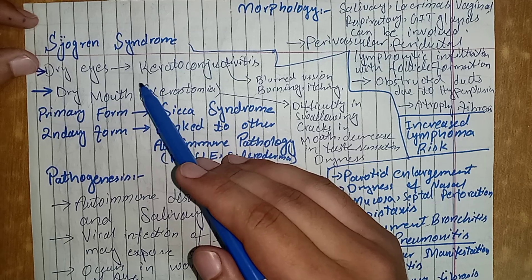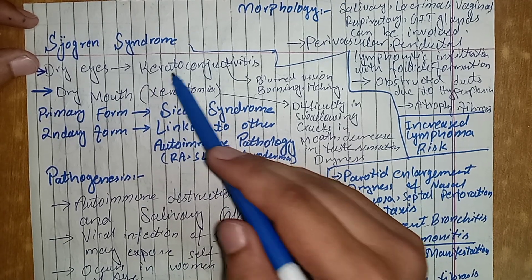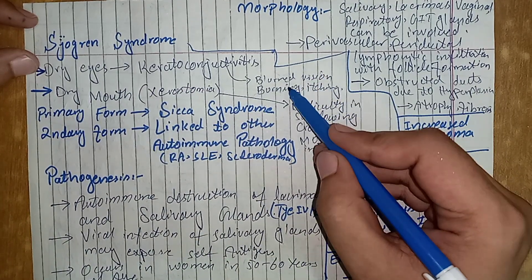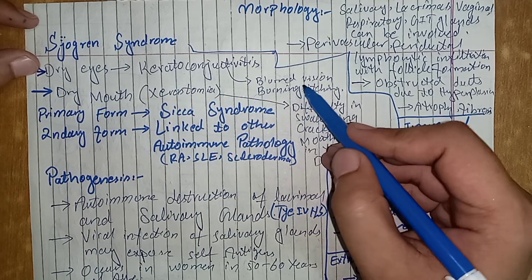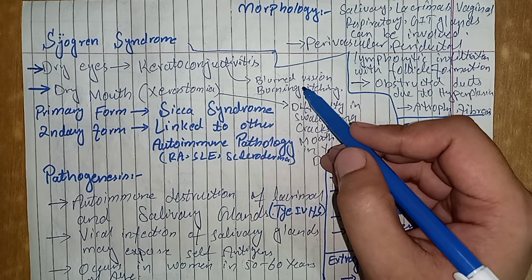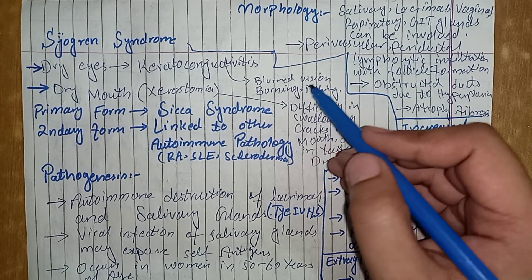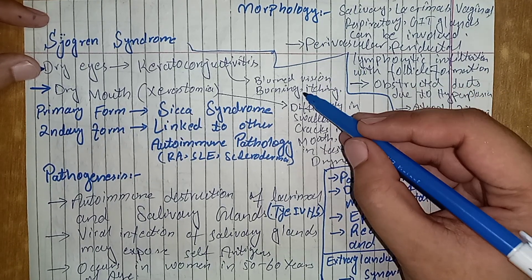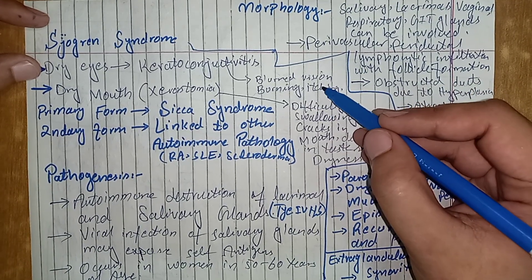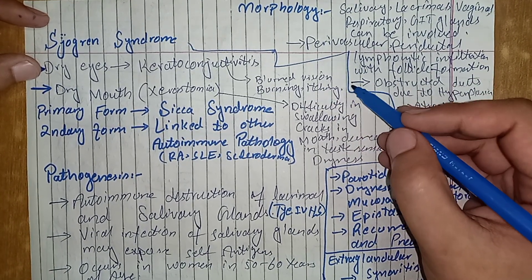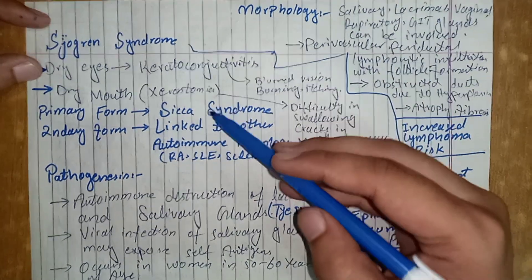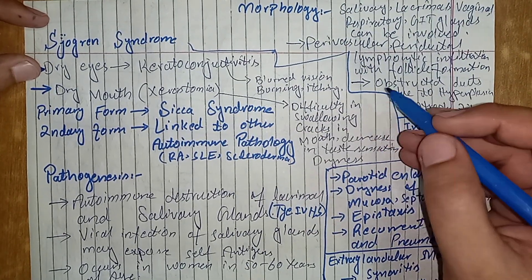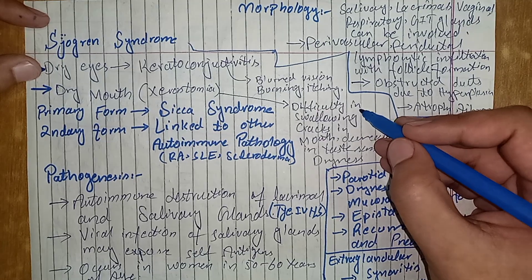So when eyes become dry, or when there is keratoconjunctivitis, there will be blurred vision because the eye will be dry, and there can be damage to the cornea. Vision will be blurred, there will be a burning sensation in the eyes, and there will be itching in the eyes. When there is dry mouth, there will be no saliva-mediated lubrication of solid food.